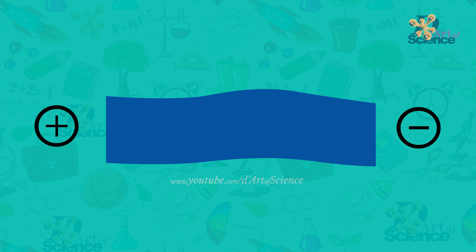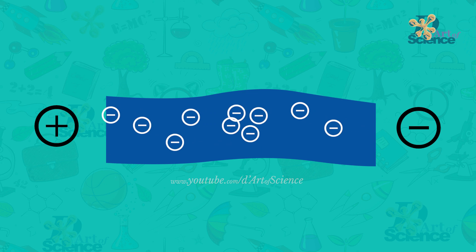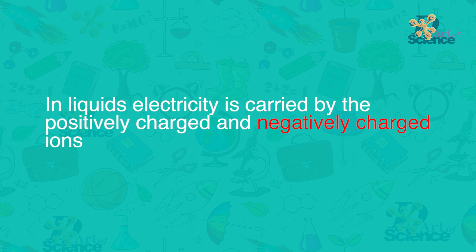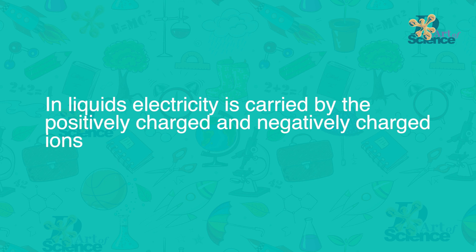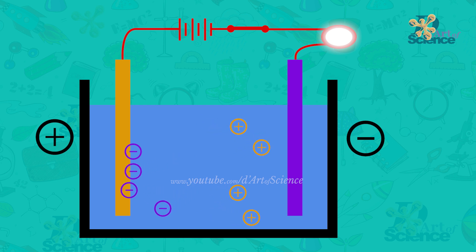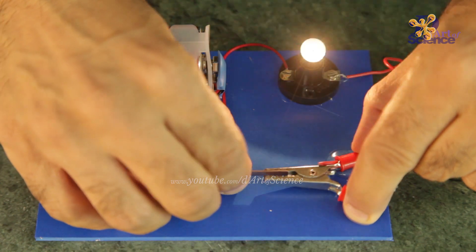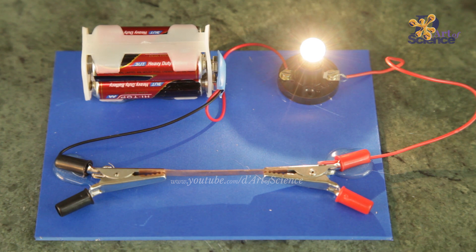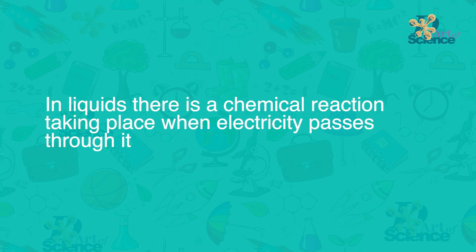The first difference is: in solids, electricity is carried by the electrons through the solid. But in liquids, it is carried by the positively charged and negatively charged ions. For example, in the copper sulfate solution, electricity is carried by the copper ions and sulfate ions. The second difference is: in solids, there is no chemical reaction taking place when electricity is passed through it. In liquids, there is a chemical reaction taking place when electricity passes through it.